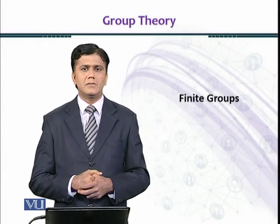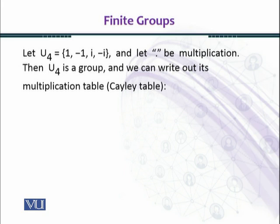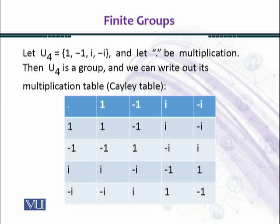In this module we shall discuss some more finite groups. Let U4 equal to {1, -1, iota, -iota}. These are the fourth roots of unity, and let the operation be ordinary multiplication in complex numbers. U4 is a group, and as seen in the previous module we have constructed Cayley's table. Here we also construct Cayley's table for U4.